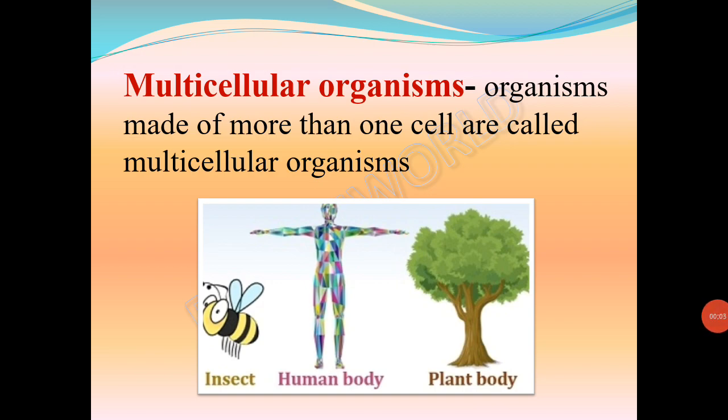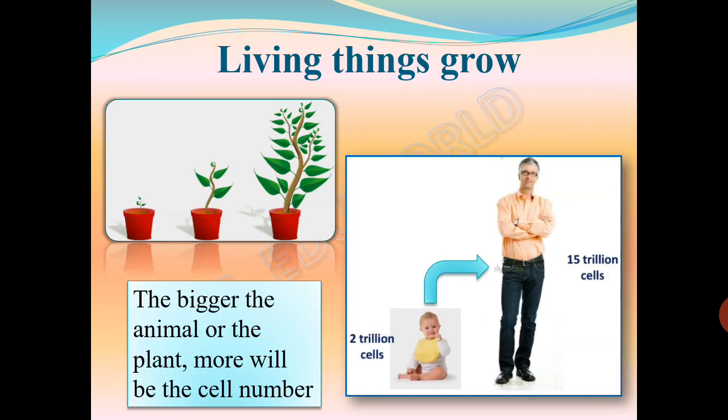Multicellular organisms are made up of more than one cell. All organisms that we see around us with our naked eye are multicellular organisms — for example, human beings, trees, insects, birds, etc. Living things grow: a plant gets taller and produces new leaves and flowers; a child grows into an adult. In multicellular organisms, this growth happens due to an increase in cell number. The bigger the animal or the plant, the more cells it will have.